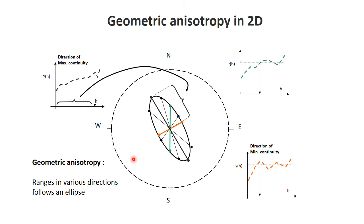Geometric anisotropy essentially means that the range in various directions follows an ellipse. You read it as: I have a direction of maximum continuity with the largest range, a direction of minimum continuity with the smallest range, and anything in between lies in between on that ellipse.